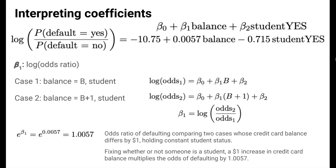In the context of our actual numbers, e to the beta 1 represents an odds ratio rather than a log odds ratio. The odds ratio is 1.0057. We can say this is the odds ratio of defaulting, comparing two cases whose credit card balance differs by 1 dollar, holding constant student status. Equivalently, fixing whether or not someone is a student, a 1 dollar increase in credit card balance multiplies the odds of defaulting by 1.0057.